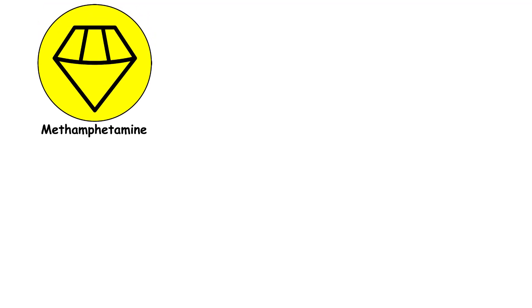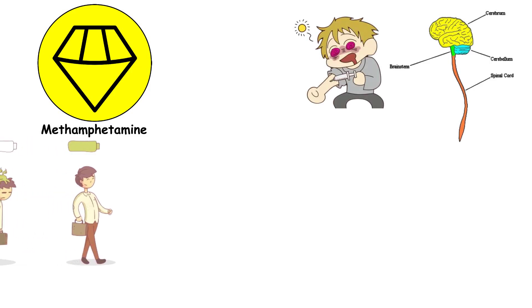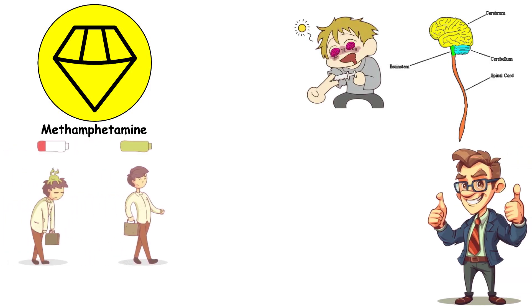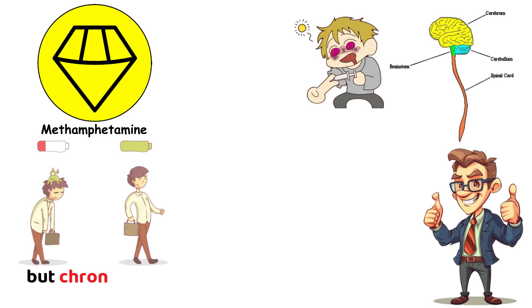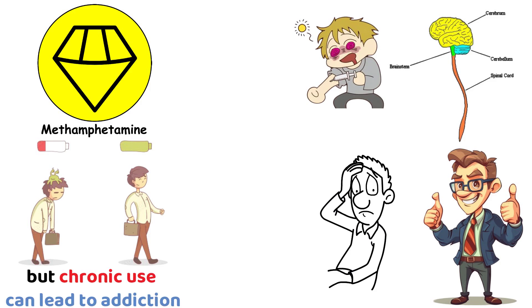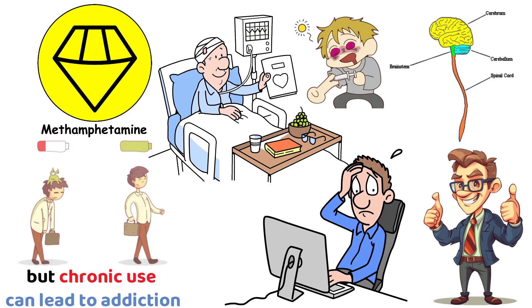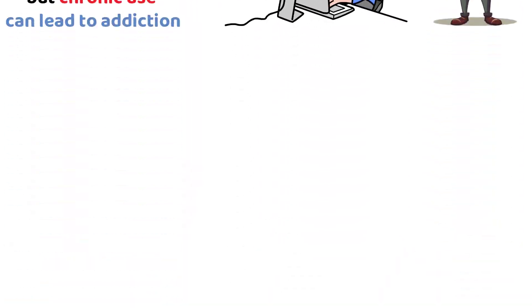Methamphetamine is a potent stimulant that affects the central nervous system. It produces intense euphoria, increased energy, and a sense of confidence, but chronic use can lead to addiction, cognitive impairment, and severe health problems.